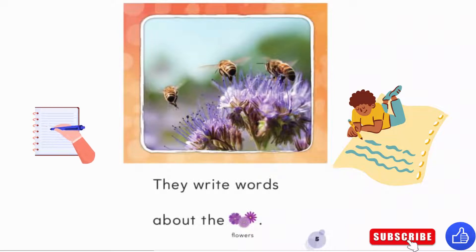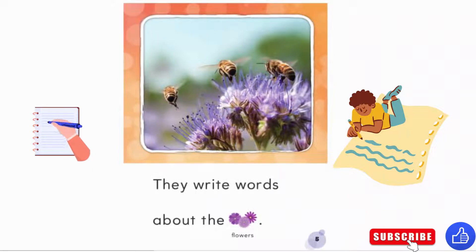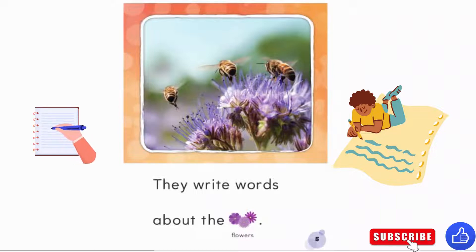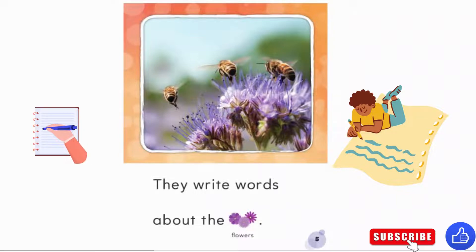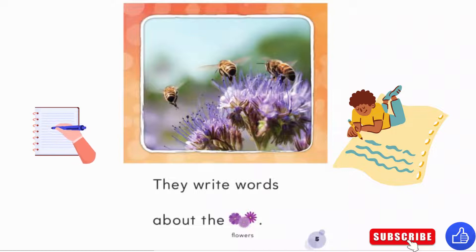They write words about the flowers. There's all sorts of words we can think of to describe flowers — colorful, beautiful, red, purple, big, small flowers. Flowers with petals — small petals, large petals.